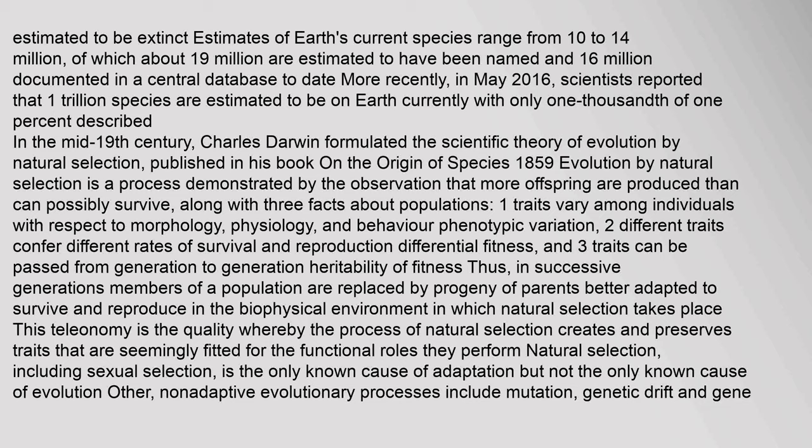Estimates of Earth's current species range from 10 to 14 million, of which about 1.9 million are estimated to have been named and 1.6 million documented in a central database to date. More recently, in May 2016, scientists reported that 1 trillion species are estimated to be on Earth currently, with only 1/1000th of 1% described.